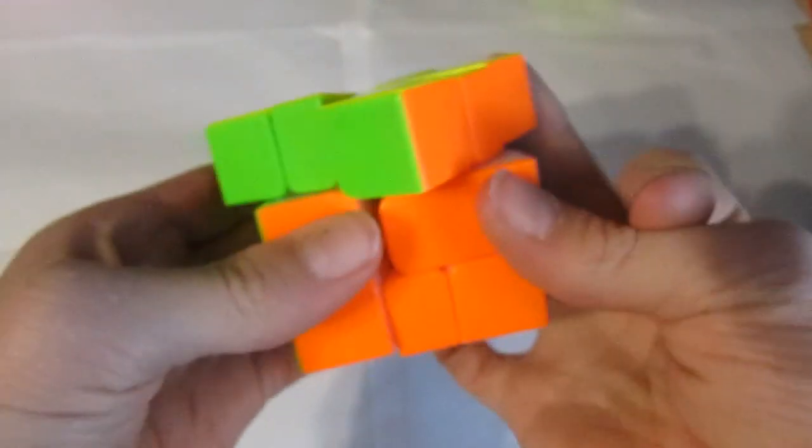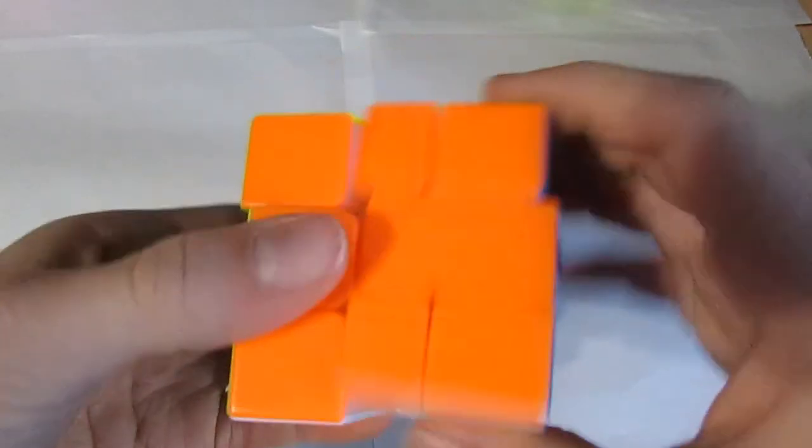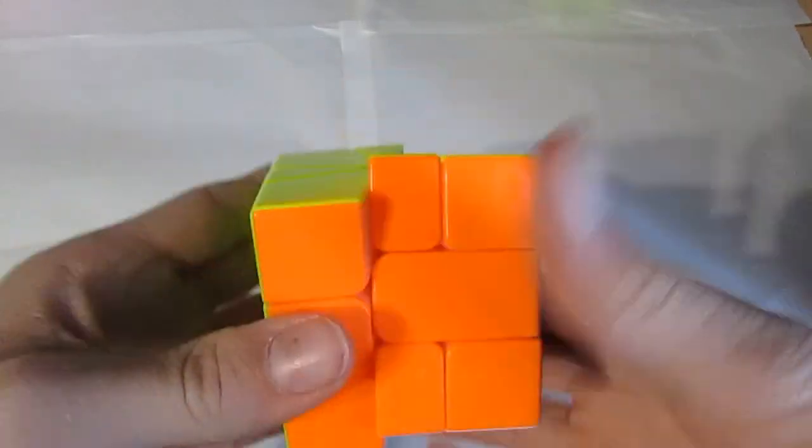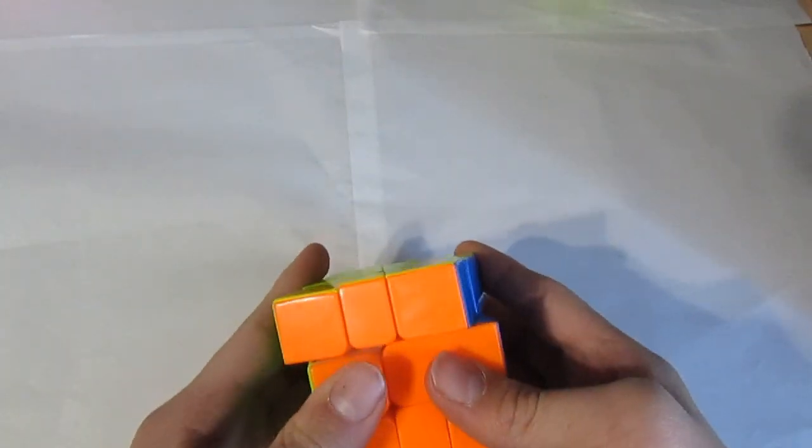And for Square One, my second favorite event, is the regular Valk. It's very loose, which I put it that way. But I'm definitely going to change it again because sometimes it'll pop.